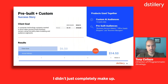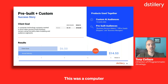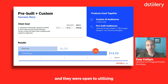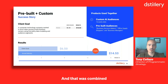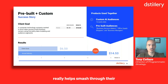This is a quick example of one of our clients that did activate against both solutions — pre-built and custom AI. This was a computer technology company that wanted to drive sales among small business owners, and they were open to utilizing their own first-party data to power a custom AI model. That was combined with the pre-built solution, which our client success managers helped identify the best segments for them. The combination of both really helped smash through their ROAS benchmark of 650 by 124%. So this does work.